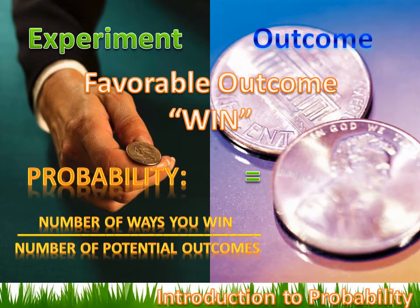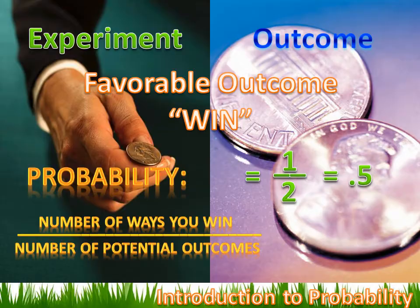For our coin toss, the probability equals the number of ways you can win — there's only one way, the coin has to land on heads — divided by the number of potential outcomes, which is two: it could land on heads or tails. So the probability is one divided by two, or one half. You could also express that as a decimal: 0.5, which equals 50 percent.